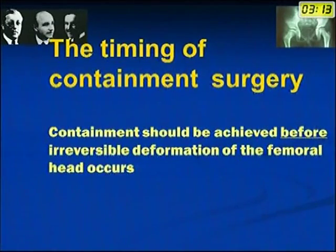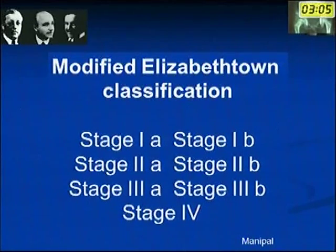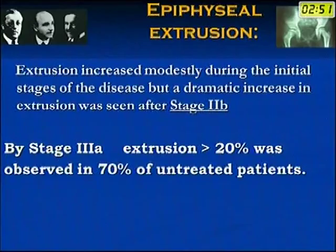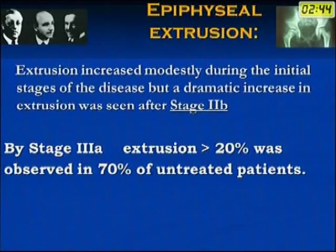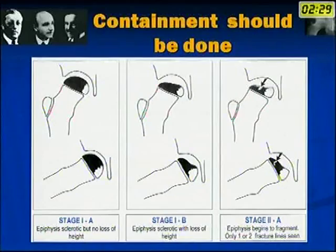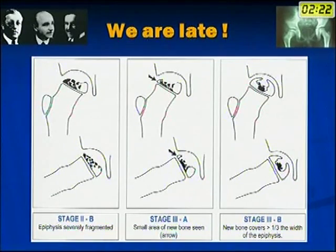Containment surgery should be done before irreversible deformation of the femoral head occurs. For this, we follow the Manipal modification of the Elizabeth Towne classification. When extrusion exceeds 20%, there is a very high chance of irreversible deformation. Extrusion increases modestly in early stages but dramatically before stage 2B. By stage 3A, extrusion of more than 20% was seen in more than 70% of untreated cases, according to Benjamin Joseph from Manipal. So containment should be done in stage 1 and stage 2A — by 3A, we have missed the boat.